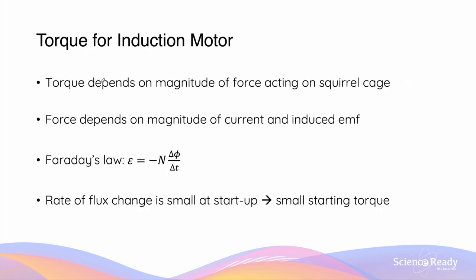Like all motors, the magnitude of torque depends on the magnitude of force acting on the rotor — in this case, the squirrel cage. The force depends on the magnitude of current, and therefore the induced EMF, according to Faraday's law. By Faraday's law, the magnitude of EMF is proportional to the rate of flux change. This means we can increase the EMF, and therefore the torque of the induction motor, by increasing the rate at which the flux is changing.